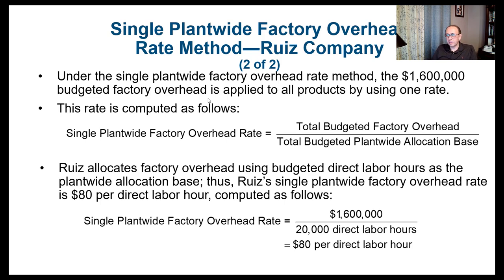Under the single plant-wide factory overhead rate method, the $1.6 million budgeted factory overhead is applied to all products using one rate. The rate is computed as total budgeted factory overhead divided by total budgeted plant-wide allocation base: $1,600,000 divided by 20,000 direct labor hours equals $80 per direct labor hour. That's Rose's single plant-wide factory overhead rate.